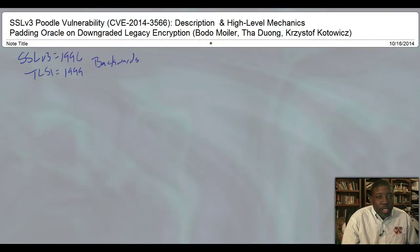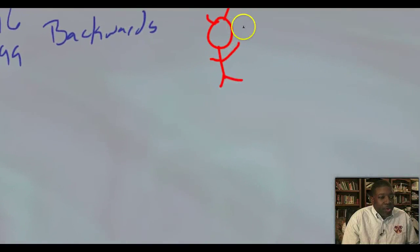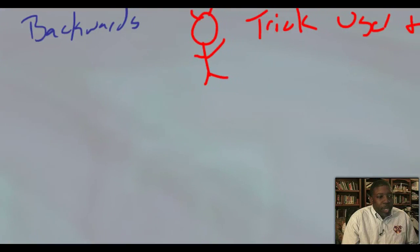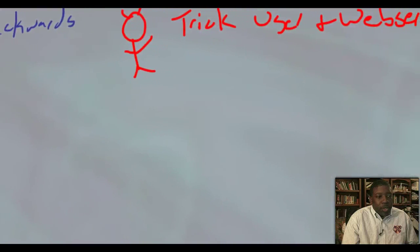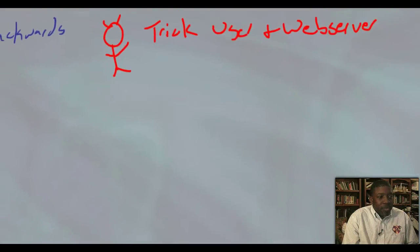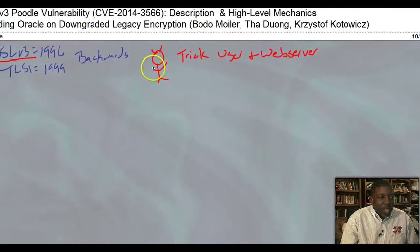So what has to happen in order to use this vulnerability is that you need to have someone who, first of all, has the knowledge of this vulnerability and this person, I'm drawing this person right here, the attacker, has to trick the user and the web server, or just in case you don't understand what a web server is, the website, the web company, into using SSL v3. So how does he do that, or how does that person, that attacker, do that? Well that's what we will discuss today.